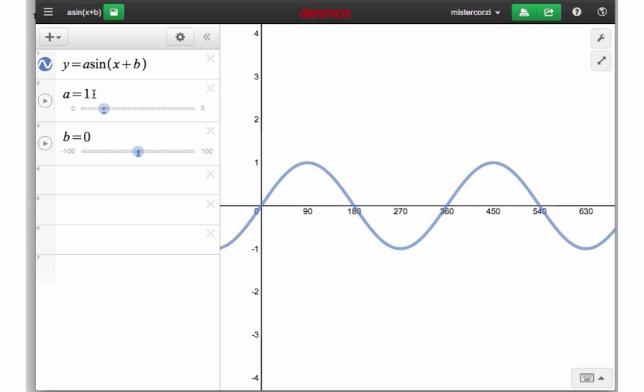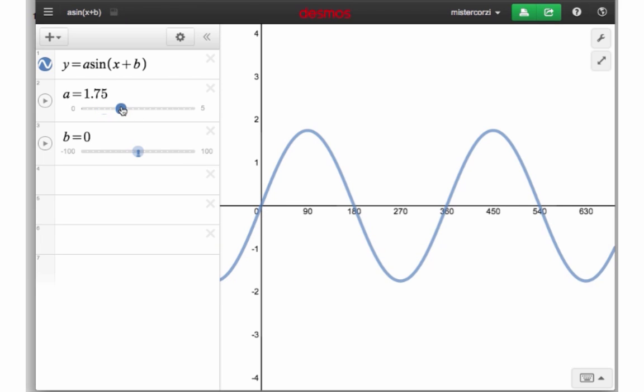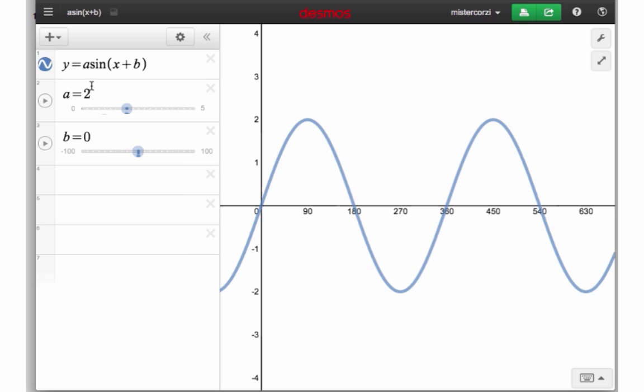We're going to have a look at the effect of altering this number that's multiplying the sine of X. B in this case is just 0 just now, so just ignore that. We've got one lot of sine X being shown. If we increase the value of A, notice what happens to the amplitude. We're now multiplying sine X by 2.